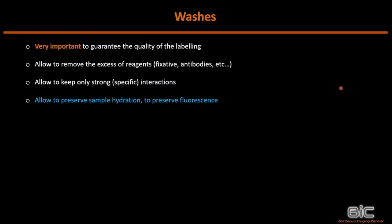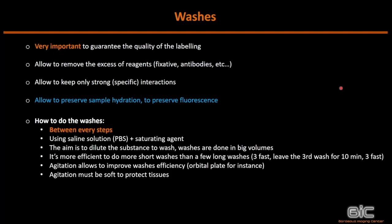Washes are, for me, the main step of immunolabeling — very important to guarantee quality. They remove excess of all reagents since we always work in excess, keeping only strong and specific interactions. In light microscopy, they also preserve sample hydration and fluorescence. Washes must be done between every step, using saline solutions containing the saturating agent once saturation is done. Work in big volumes, do many short washes rather than a few long ones. For example: three fast washes, leaving the third for 10 minutes on gentle agitation, then three more fast washes.